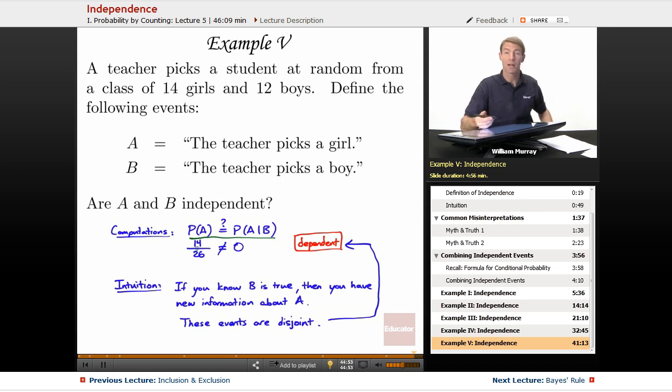P of A? What's the probability that we pick a girl? Well, there's 14 girls out of 26 total students. What's the probability that we pick a girl given that we picked a boy? That would be zero, because if we picked a boy, we couldn't have picked a girl. Now those two numbers didn't come out to be equal to each other, so that's how we know that they're dependent. That's how you do it by the computations.